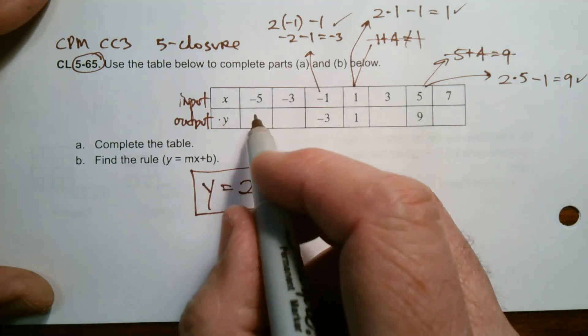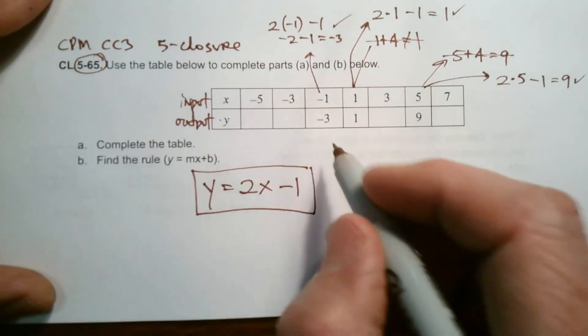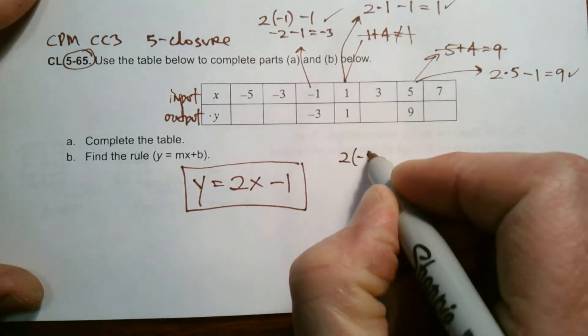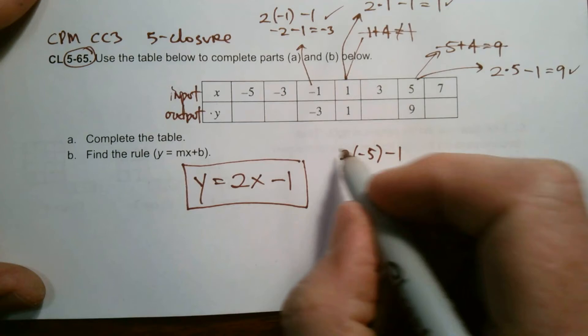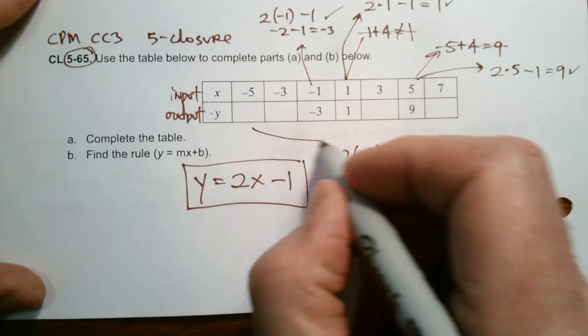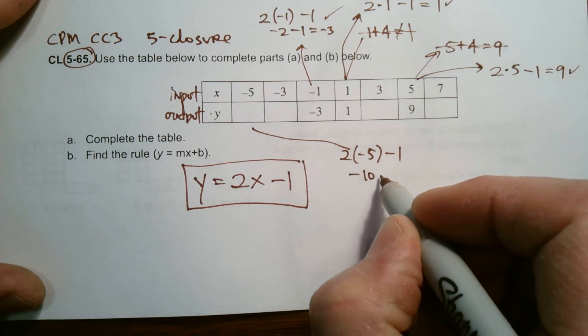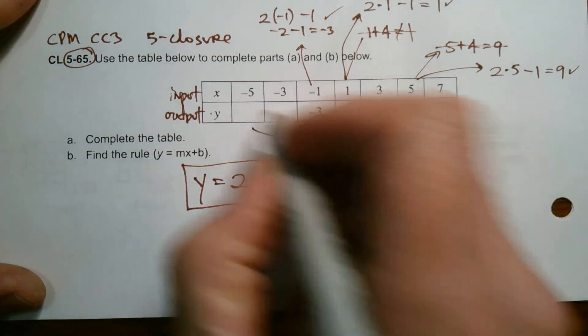So I just need to do that each time. So let's go through. So what is two times, I'll go here, do some math on the side, two times negative five minus one. That's what's going to go right in here. Two times negative five minus one. Well, two times negative five is negative 10, negative 10. Then minus one is negative 11. So yeah, negative 11 goes there.